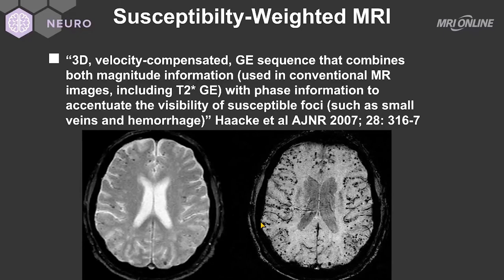Susceptibility weighted MRI is a technique developed by Mark Haacke. It is a 3D velocity-compensated gradient echo sequence that combines magnitude information as well as phase information, and accentuates the visibility of susceptible foci such as small veins and hemorrhage. We usually reconstruct this using a minimum intensity projection — a mIP — which shows the darkest signals representing hemorrhage.